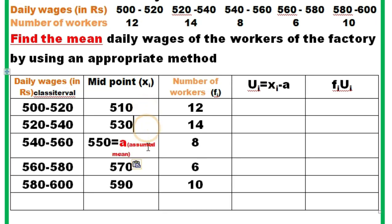Out of these, we can take any one as assumed mean, but we have taken 550 as a. That means assumed mean; we can take any one, no problem, and the answer will be the same. Now ui, how is it? xi minus a. That means 510 minus 550, we will get minus 40.